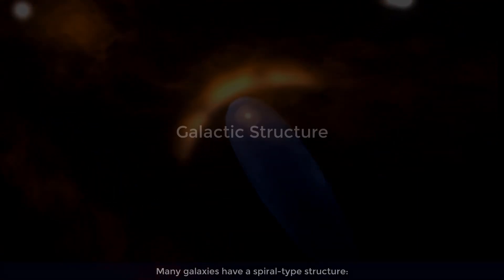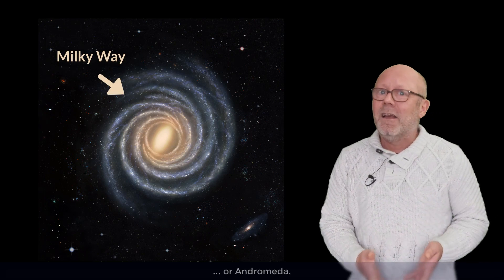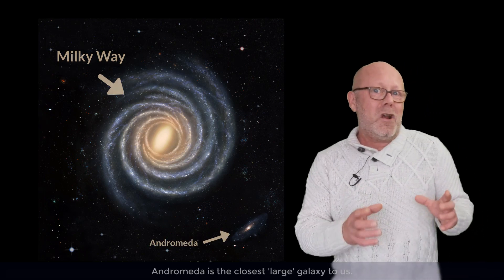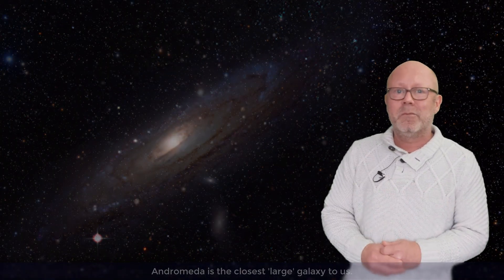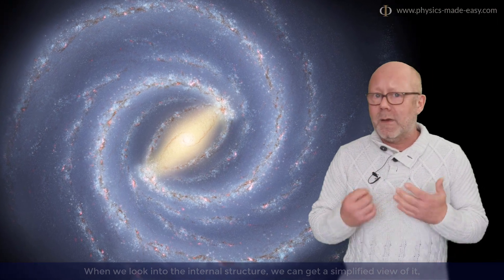Many galaxies have a spiral-type structure, like the Milky Way or Andromeda. Andromeda is the closest large galaxy to us. It's kind of the Milky Way's buddy. And when we look at the internal structure, we can have a simplified view of it, which will allow us to understand the dynamics of the galaxies.